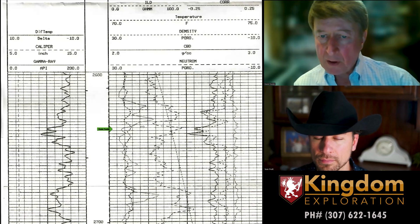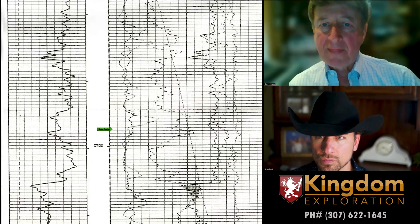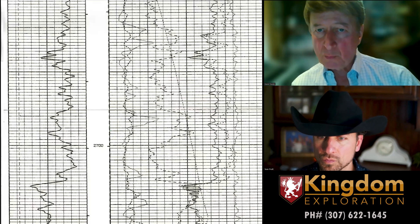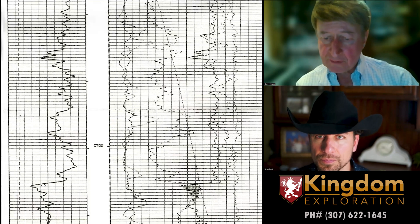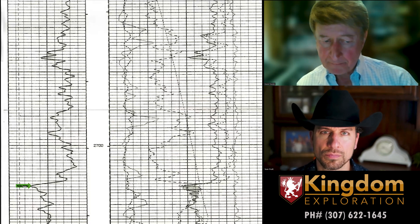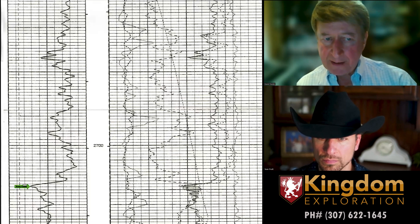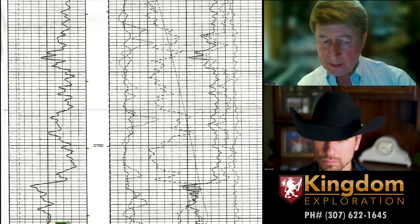Now I'm going to take you down the hole a little bit and show you a zone that was actually a producible zone within this well — a zone from which we produced gas and oil. Even compared to the zone we looked at earlier, this zone is an even cleaner sand. You can see the thickness of this zone goes all the way from here down to below where the log is cut off — so we're looking at over 30 feet of reservoir quality sand here.